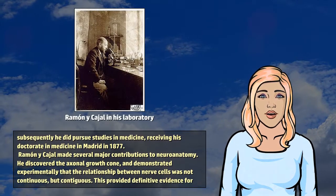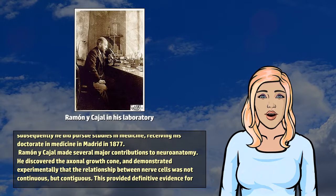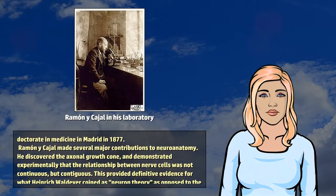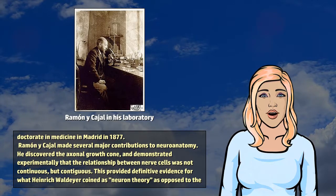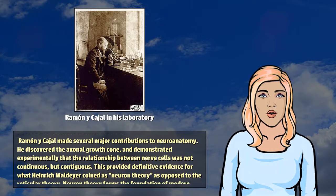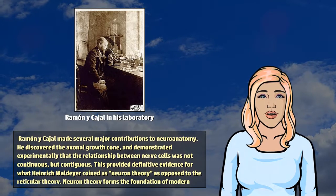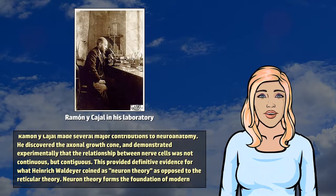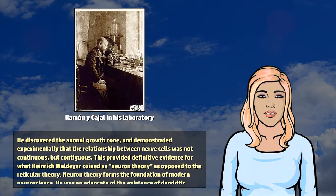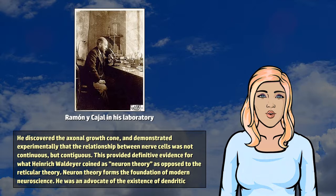Ramon y Cajal made several major contributions to neuroanatomy. He discovered the axonal growth cone, and demonstrated experimentally that the relationship between nerve cells was not continuous, but contiguous.